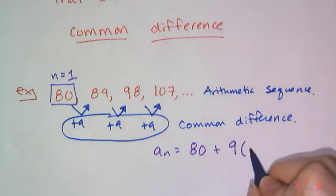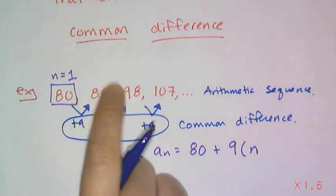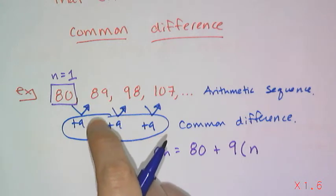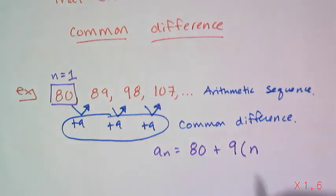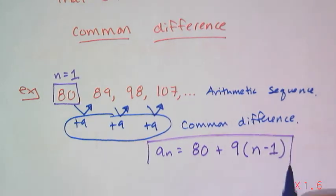And it can't just be n. Because if it were n, then when I plug in a 1, I get an 89. It shifts it over to this term. So in order to get the index right, if I subtract off 1, then I'm going to get the rule that's going to work.